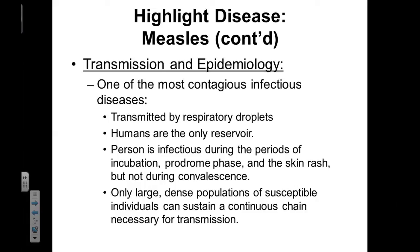Measles is an incredibly infectious disease. It's transmitted by respiratory droplets, so if somebody sneezes, the measles virus can enter the air and float around a room and infect everyone within that room. On the plus side, humans are the only known reservoir of the measles virus. So in theory, if we were to give everyone in the world the vaccine, it would be eliminated within a generation because there wouldn't be any animal reservoirs harboring the virus.